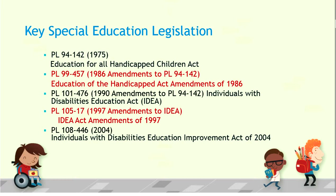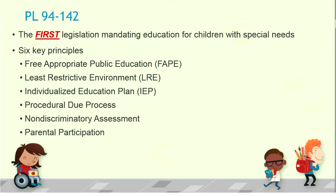I want to take you back to 94-142 and explain the six key principles of this law, which correlate to those court cases we discussed. These principles are: free appropriate public education, least restrictive environment, an individualized education plan, procedural due process, non-discriminatory assessment, and parental participation. Every law since this initial law has included these same six key principles.